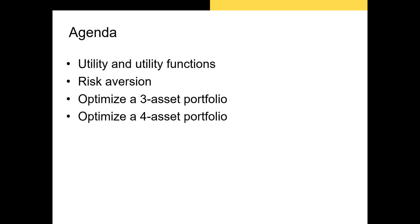In this section, I'll discuss utility theory and how to incorporate it into modern portfolio theory. Then we'll discuss the optimal portfolio. As you might expect, the ideal portfolio will lie on the efficient frontier. Then we'll use some real-world data and optimize both a three-asset portfolio and a four-asset portfolio, each consisting of some stocks and a T-bill. Let's get going.